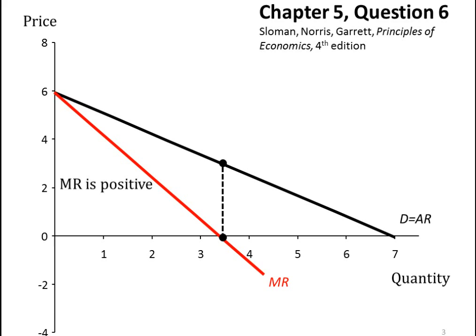Up to three and a half units, marginal revenue is positive — we can see it's falling with each additional unit, but it's still positive. At three and a half it's zero, and thereafter marginal revenue is negative. You would be taking away from total revenue by producing more than three and a half units.